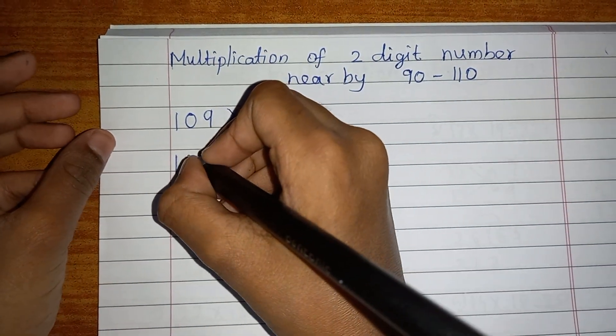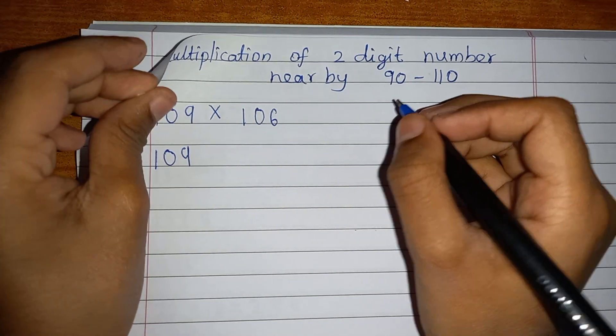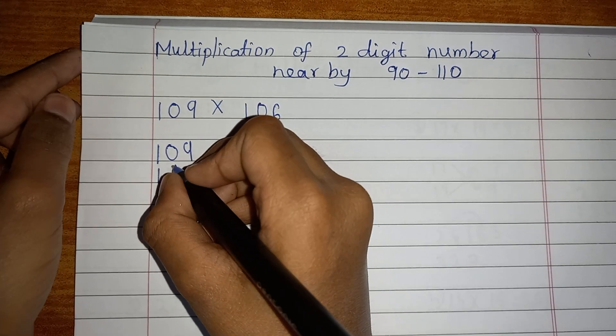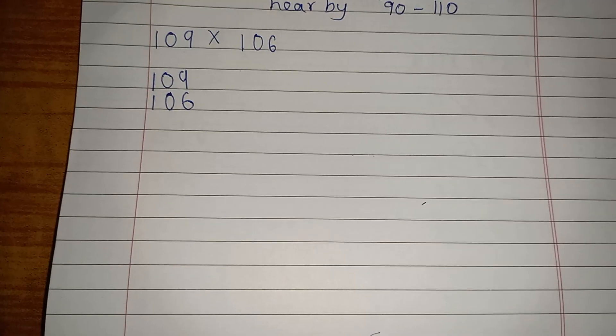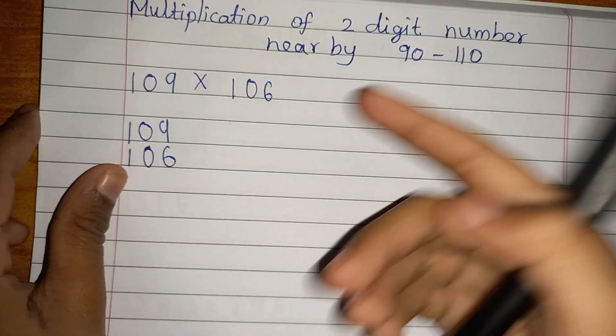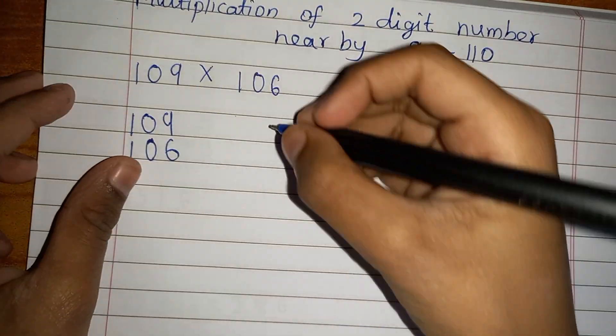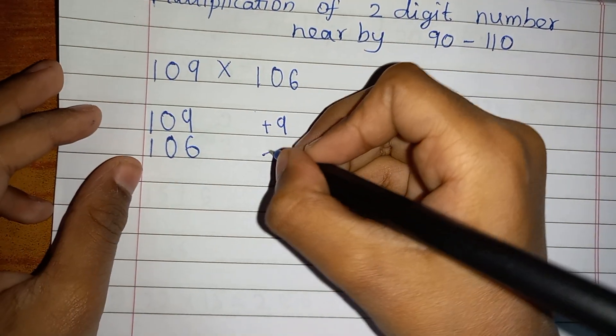109, then we have to write 106. But in this, 100 is the middle number, so I have to write this 100 plus 9 is 109, so I have to write plus 9. And plus 6 here, because it's 106.